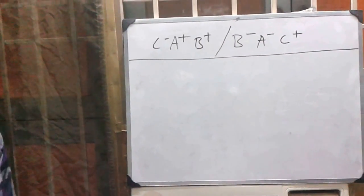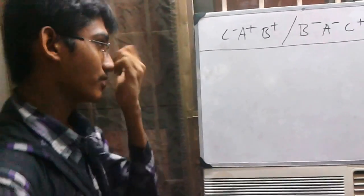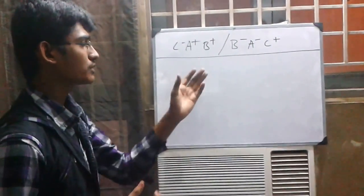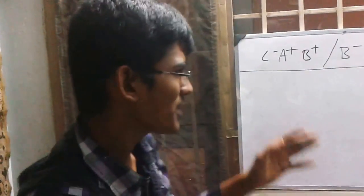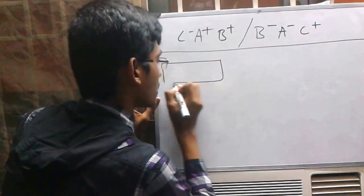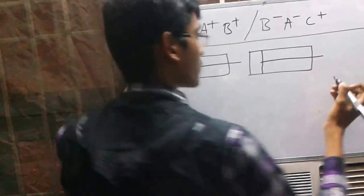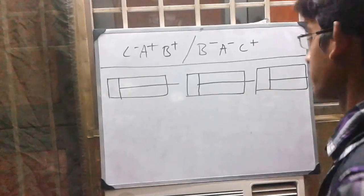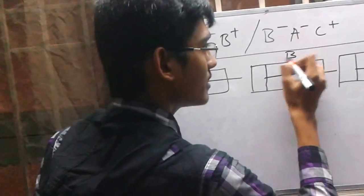Next, we are going into formation of the circuit. In order to form a circuit, we have to draw the number of cylinders. As we know, there are three cylinders, so we draw three. There you can see we have A cylinder, B cylinder, and C cylinder.